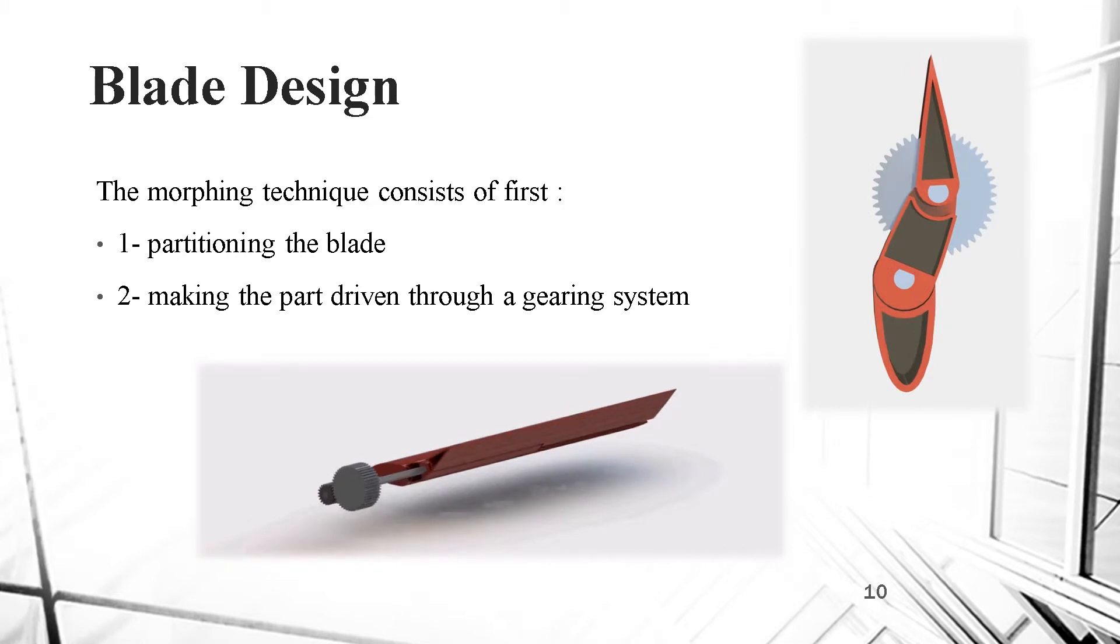Now, moving to the manufacturing and prototyping part. The morphing technique consists of, first, partitioning the blade and making the part driven through a gearing system. You can see the flaps of the wing moving in a simulation done on SolidWorks.